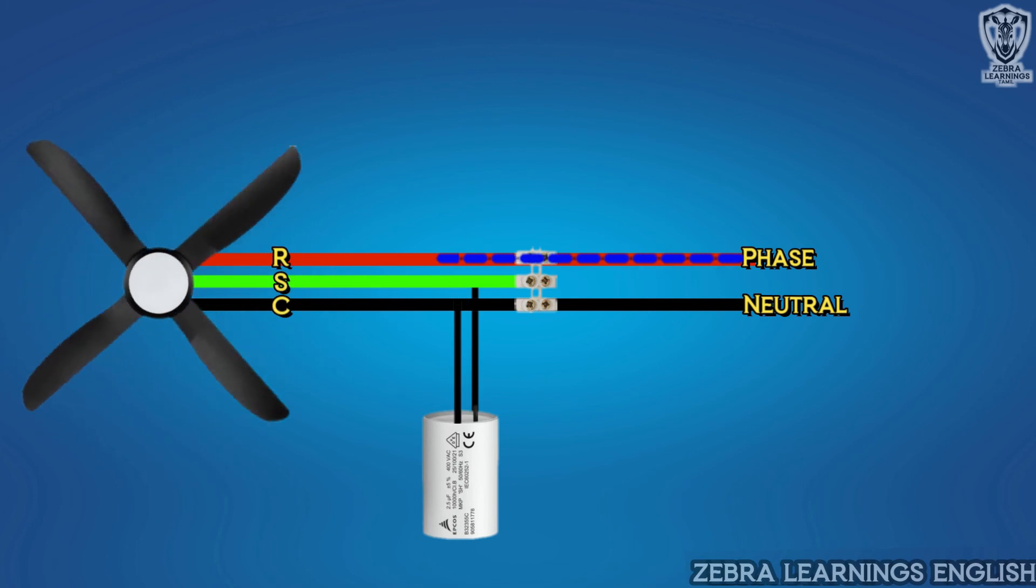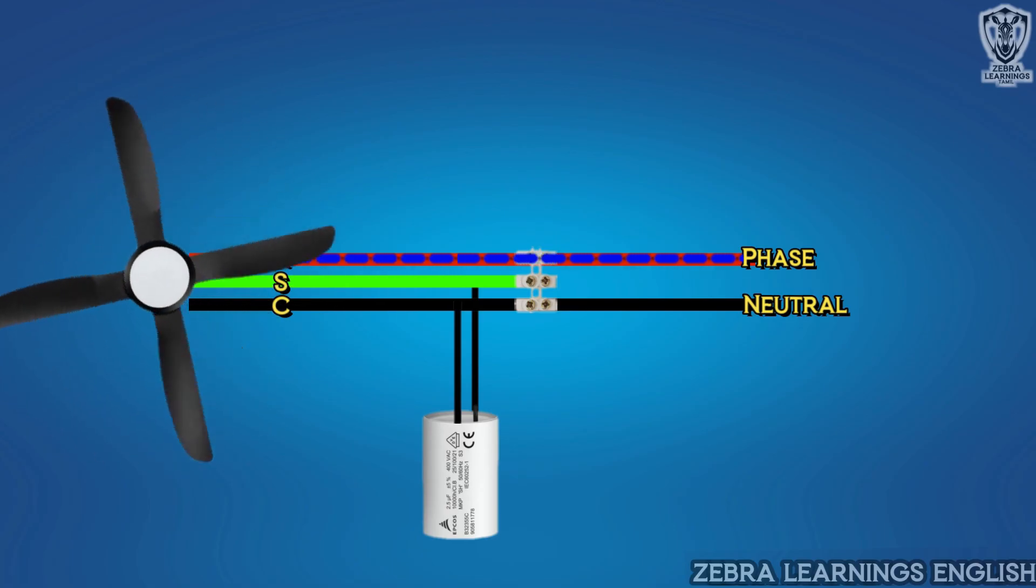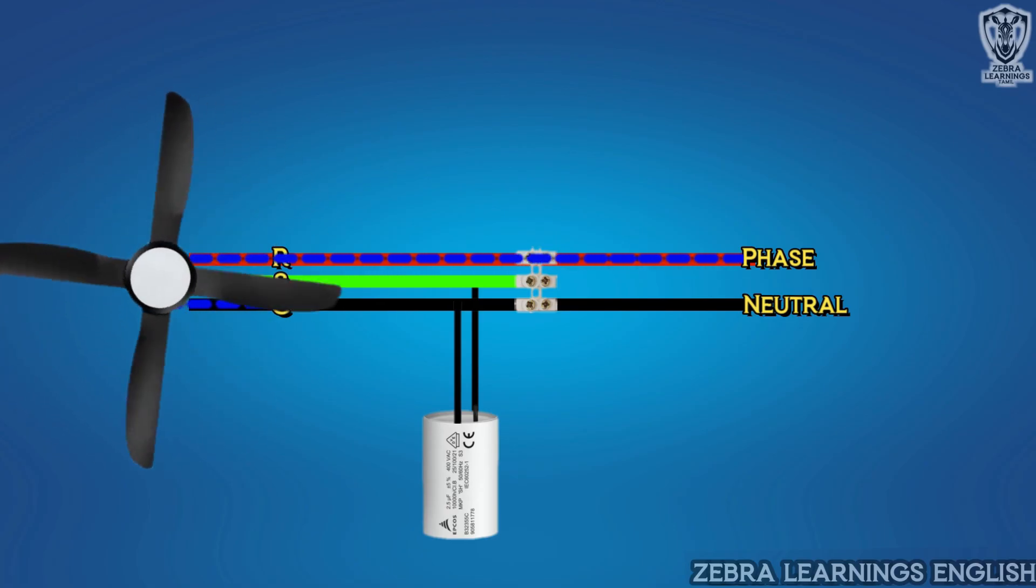After the capacitor is cut, the current flows from the phase, through the running terminal, and the fan runs continuously.